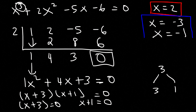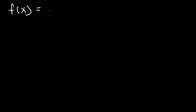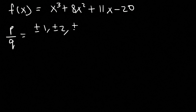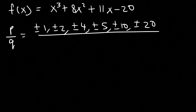So that's how you use the rational zero theorem to solve a polynomial equation: first list all the possible zeros, check which one gives a function value of 0, then use synthetic division to get the other zeros. Let's try another example. Find all the zeros of f(x) = x³ + 8x² + 11x - 20. Factors of the constant term 20 are 1, 2, 4, 5, 10, and 20, and factors of the leading coefficient 1 are just 1.